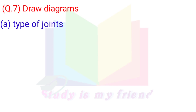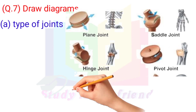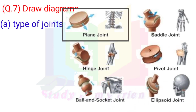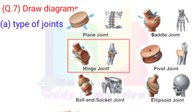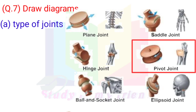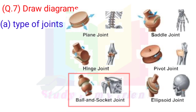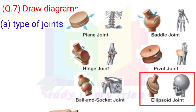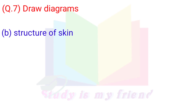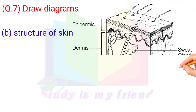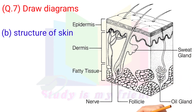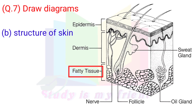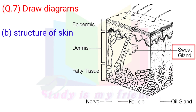Question 7: Draw diagrams. A. Types of joints. B. Structure of skin — showing layers: Epidermis, Dermis, Fatty tissue, Nerve, Follicle, Oil gland, and Sweat gland.